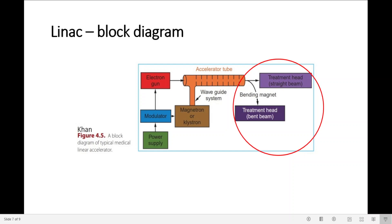Depending on the machine design, they will or will not have a bending magnet. The bending magnet is to bend the electrons, usually about 90 or 270 degrees towards the target.